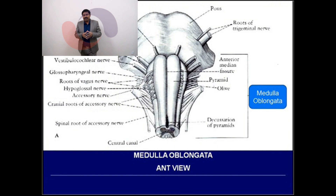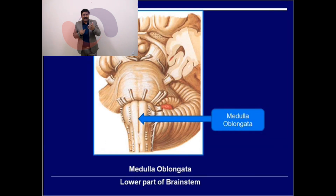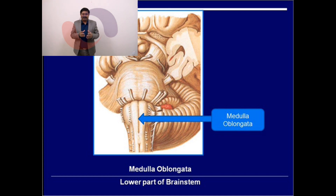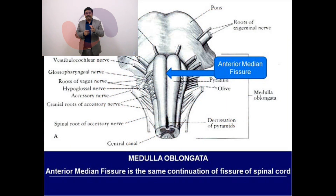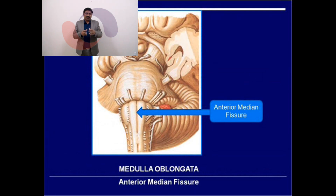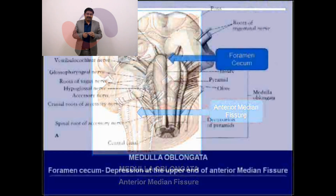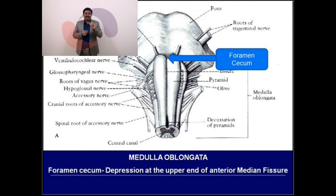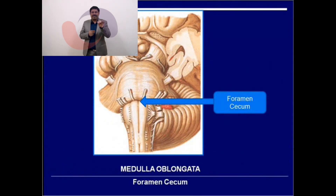We will discuss the medulla oblongata in two surfaces: the anterior surface and the posterior surface. On the anterior surface, the central feature is the anterior median fissure, which is in the midline and is the continuation of the same fissure of the spinal cord. In the upper part, this fissure ends as the foramen cecum — 'cecum' meaning blind — so the foramen cecum is a blind foramen at the upper end of the anterior median fissure.